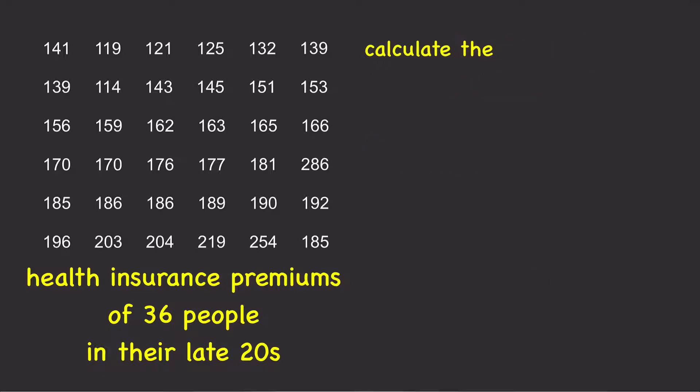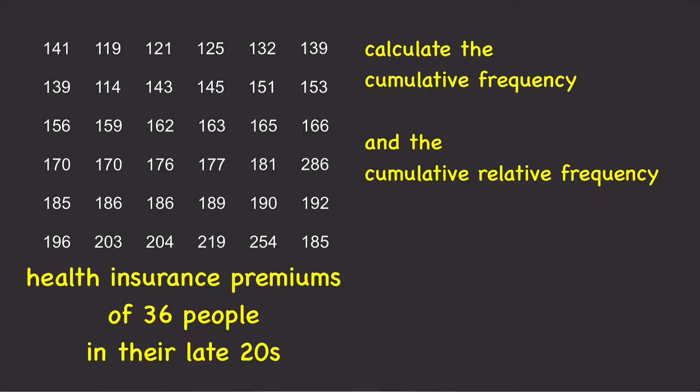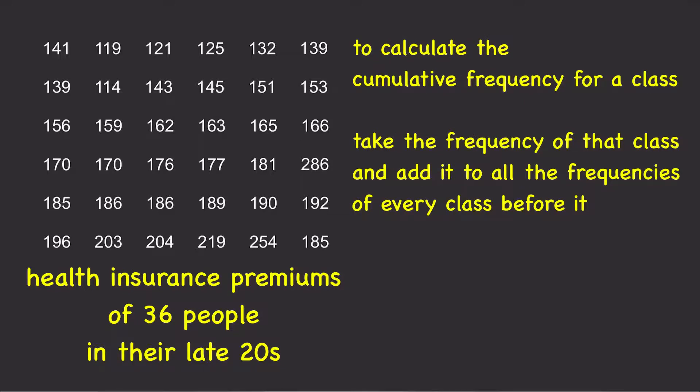We're going to calculate the cumulative frequency and the cumulative relative frequency. The cumulative frequency for each class is simply the frequency for a class plus all the frequencies for every class before it.